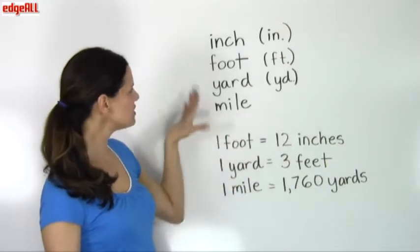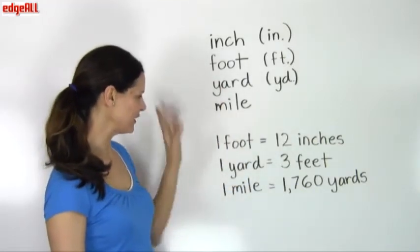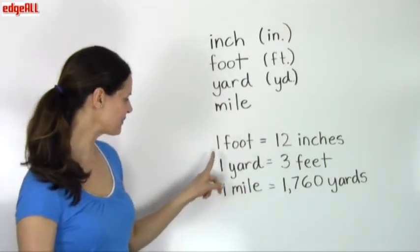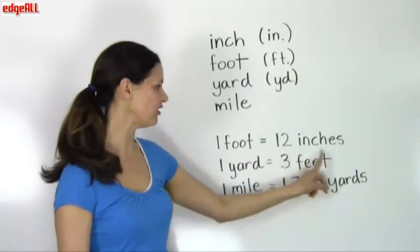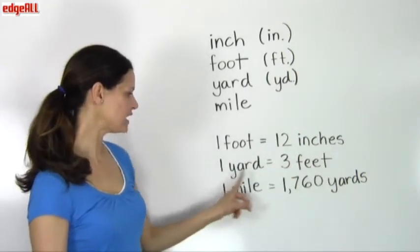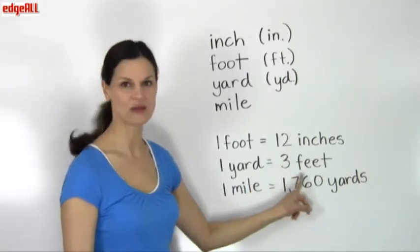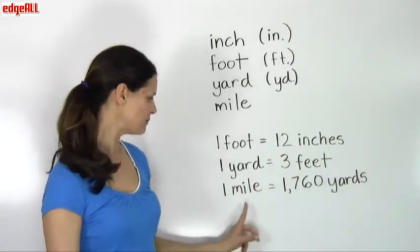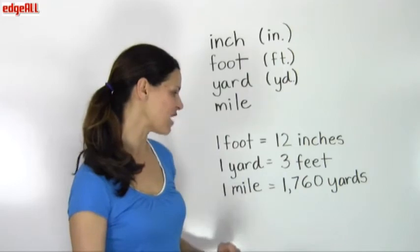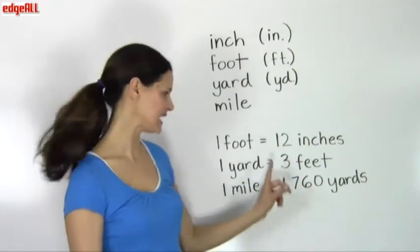All of these units are related to one another in the following way. One foot equals 12 inches. One yard equals 3 feet. One mile is equal to 1,760 yards.